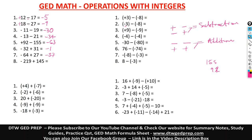Here also we have a negative and a positive, so we do subtraction, and it gives us 74. The sign takes the sign of the bigger number, which is negative.